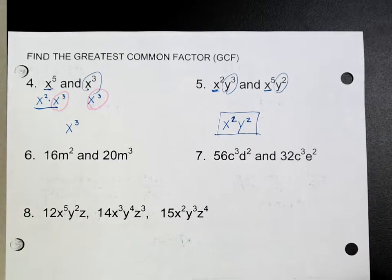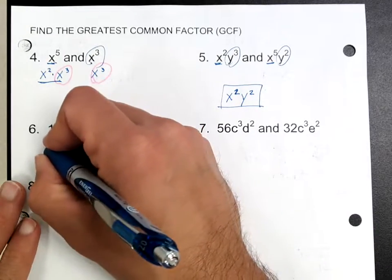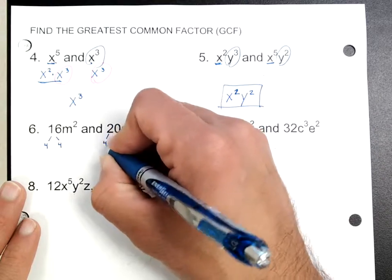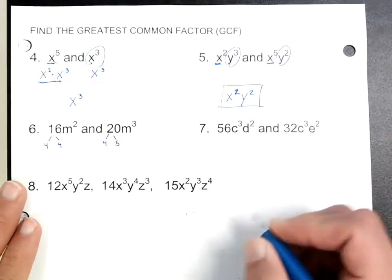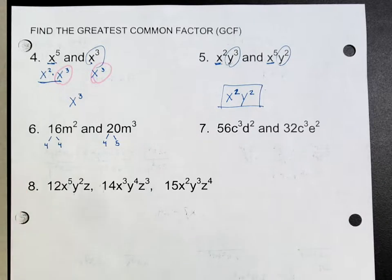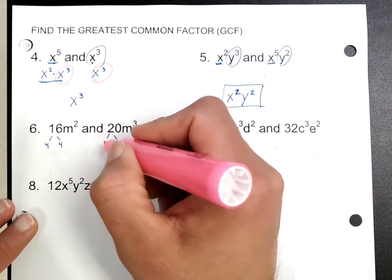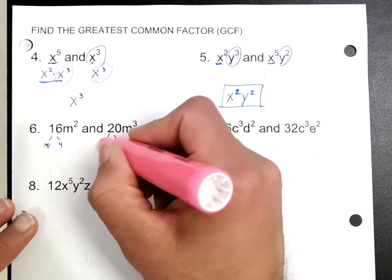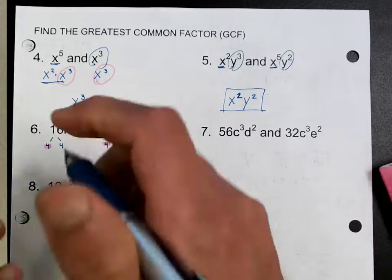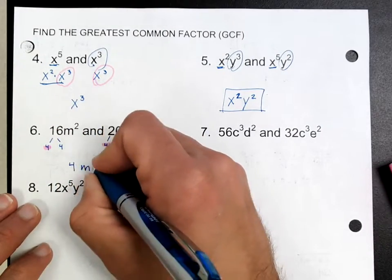Now when it comes to actual numbers, you have to break those apart into common factors. For example, I have 4 and 4, and this is 4 and 5. The numbers are more difficult because you have to look at them carefully. The greatest common factor is determined by what they have in common — notice they have a 4 in common, and nothing else. So the greatest common factor would be 4, and the smallest of these m's, which is m squared.